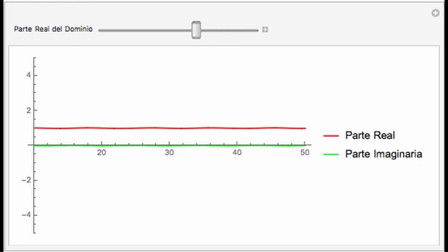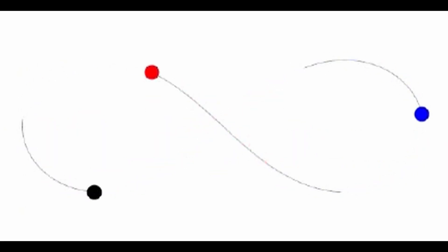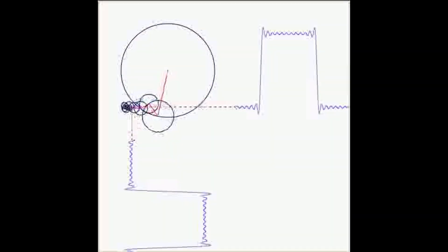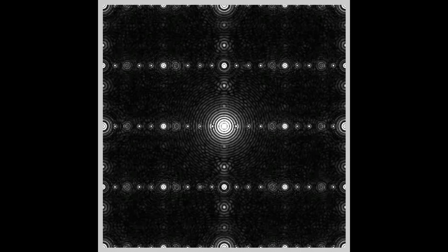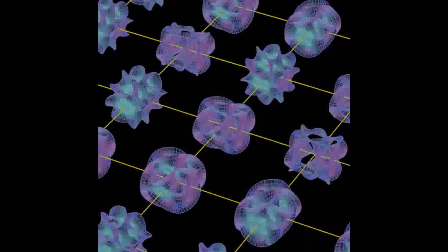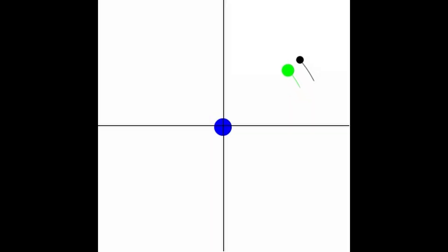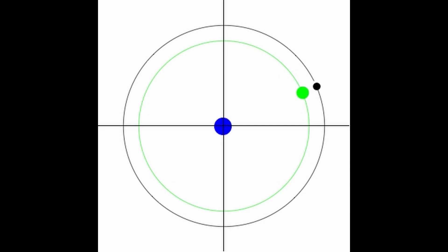Buffon's needle problem: This probabilistic method involves dropping a needle on a lined sheet of paper and using the probability of the needle crossing a line to estimate π. The formula involves the number of times the needle is dropped, the number of crossings, and the length of the needle. Computational methods: Modern computers use algorithms that can calculate π to billions of decimal places, much faster and more efficient than infinite series. Using a calculator: Many scientific calculators have a π button that provides the value for calculations. Each method has its own level of precision and practicality, with geometric measurement being the simplest and computational methods being the most precise.